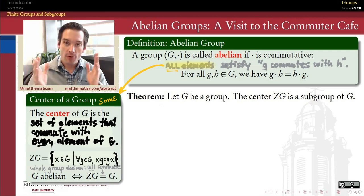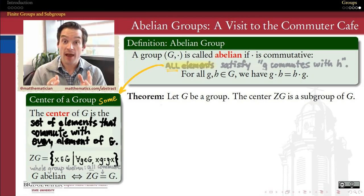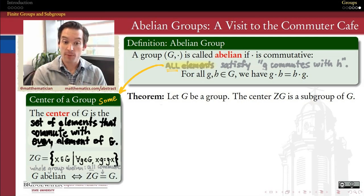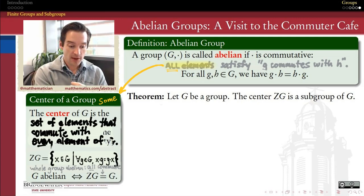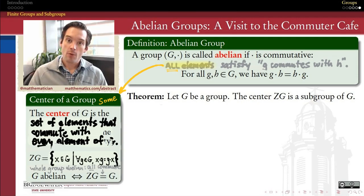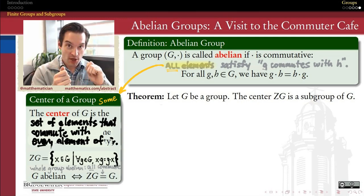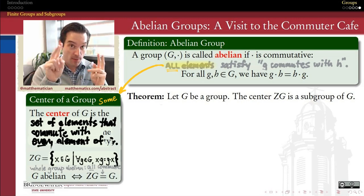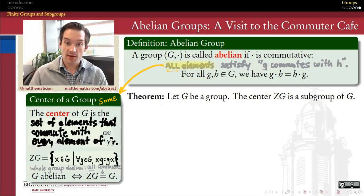We can either reduce our focus down to the set of elements inside of a group that commute with everything. That subset of elements is called the center of the group, and in our previous video we showed that the center is a subgroup. Or the other option is the one we'll explore in this video, which is to focus our attention on a given element and everything which commutes with it. That question — what is going to commute with me — is answered by a construct called the centralizer of an element in a group.